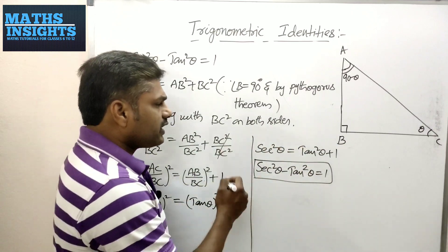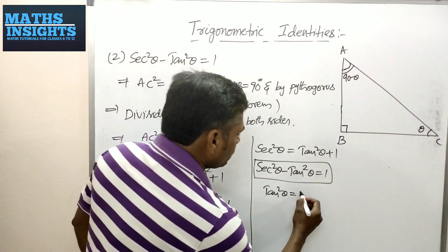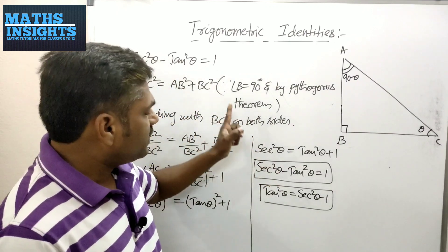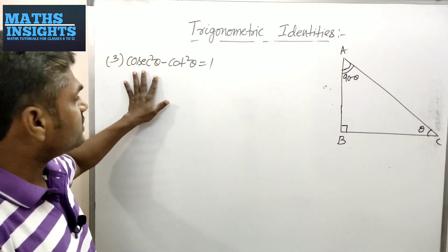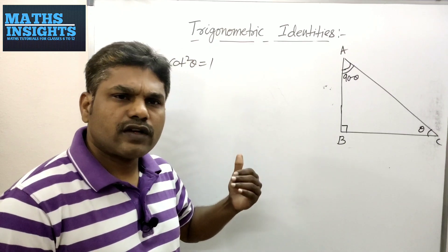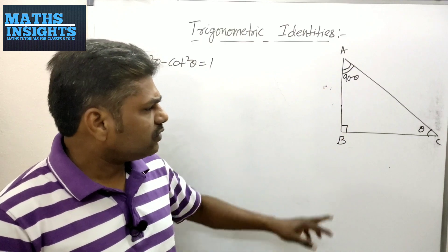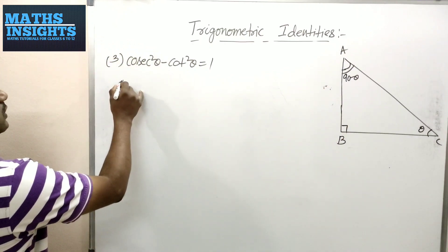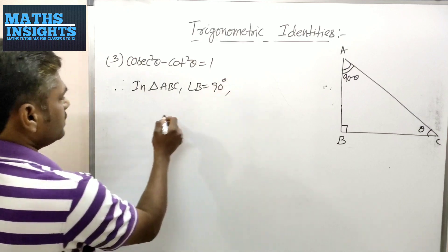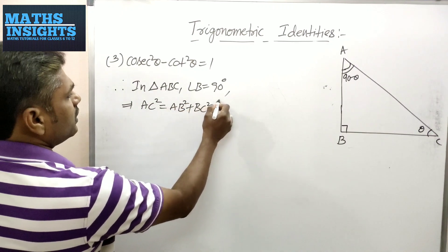From the second identity, you may also write tan²θ as the subject: tan²θ = sec²θ − 1. These are different forms of the same identity. Now for the third trigonometric identity, which says cosec²θ − cot²θ = 1. We will prove this identity the same way as the previous ones, using the same right-angle triangle with angle B = 90°.